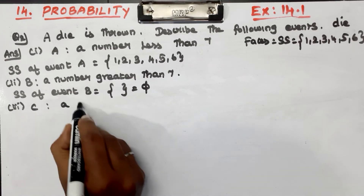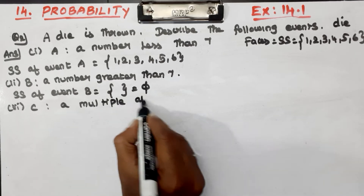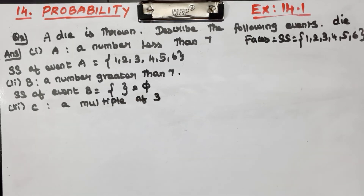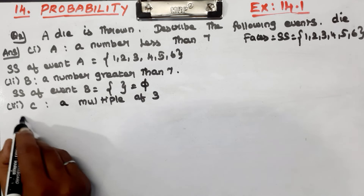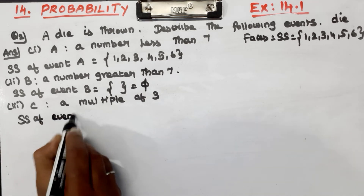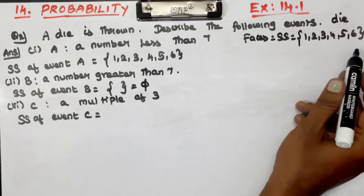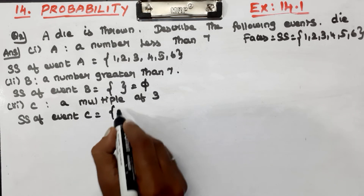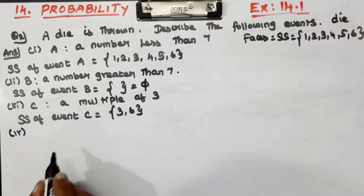Event C: multiple of three. The sample space of event C, equal to multiples of three, is 3 and 6. Next is number four.